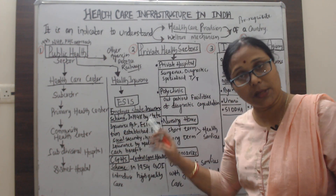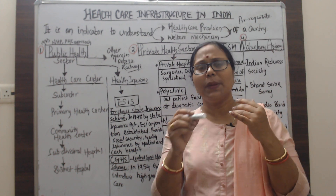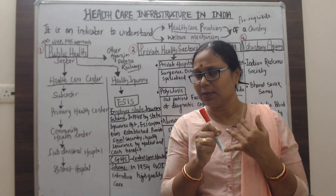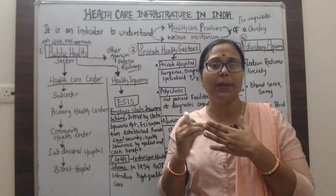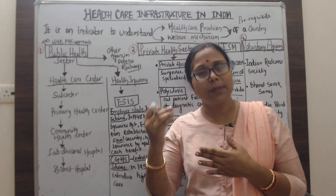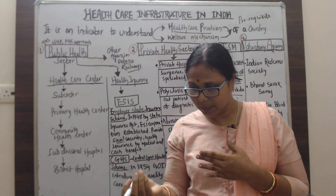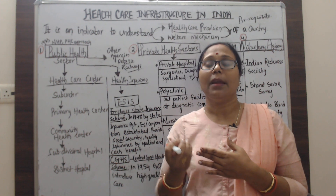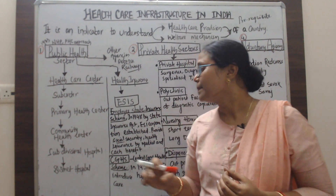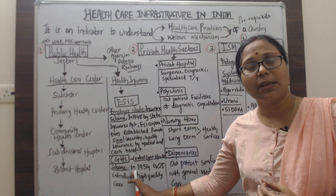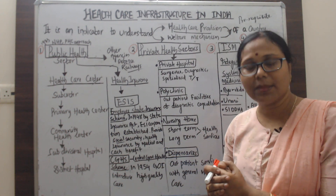The ESI — Employee State Insurance scheme — was established in 1948 by the State Insurance Act. Under this scheme, government employees and their dependents or family members get health services during illness, maternal services, accidents, and surgical cases.